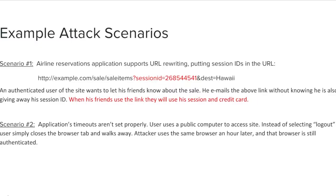In the second scenario, the user accesses a site on a public computer and then leaves by only closing the tab rather than logging out first. The next person to use that computer would be able to access the first user's session. Pause the training video here to review these examples if needed.